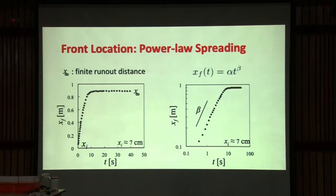How does it go? Here's the typical graph of the x position down the channel of the front in meters as a function of time in seconds. We started in this particular case with xi, the initial value at the lock, of about 7 cm and it gets longer and longer and then quite rapidly it changes and stops.